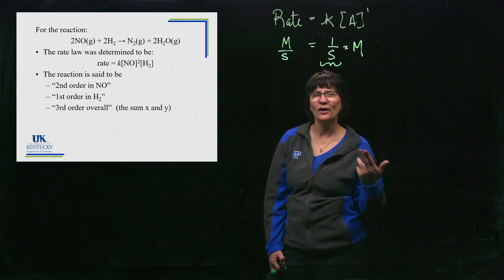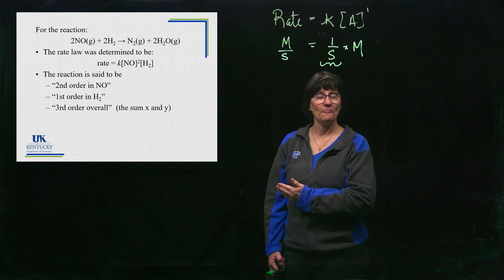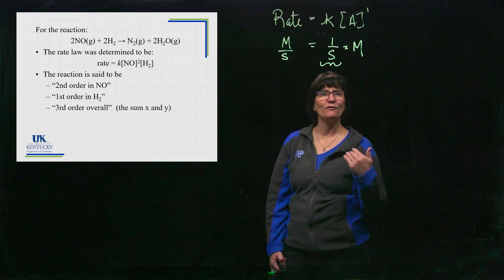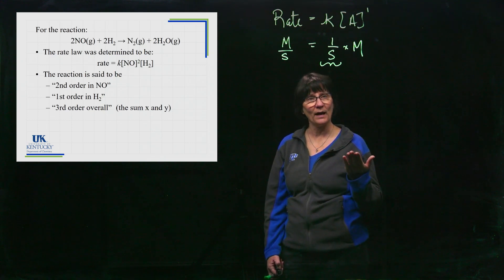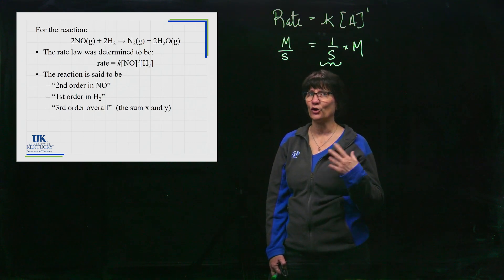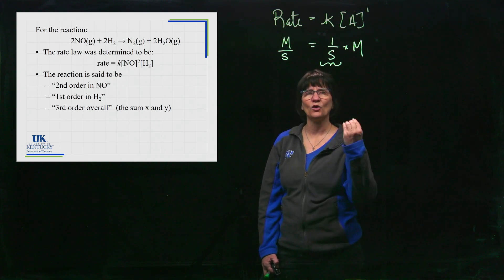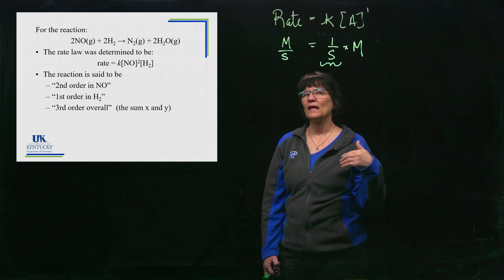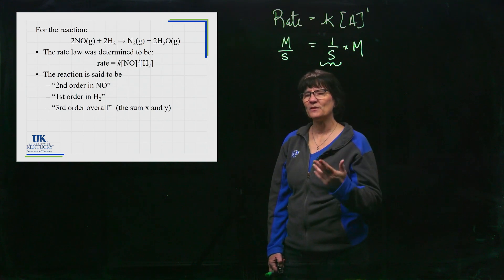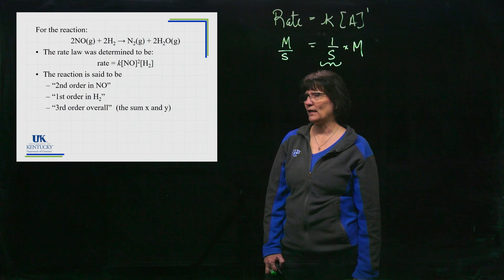This tells someone familiar with kinetics how the concentration is going to affect the rate. When it's raised to a second power, it affects the rate more drastically than a first power. If you're squaring or cubing something, it's going to affect the rate more drastically — so the order tells you about that relationship.